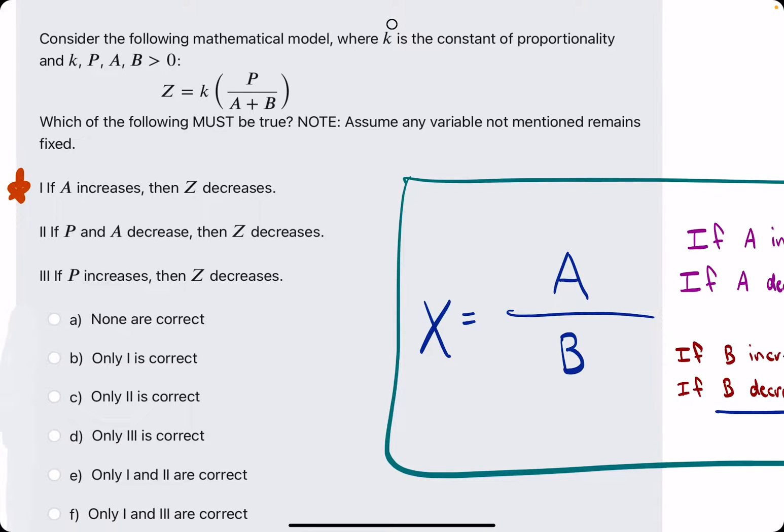Number one: if A increases, then Z decreases. A is in the denominator, so if A is increasing, then Z must do the opposite because A is in the denominator. So if A increases, Z decreases must be a true statement.